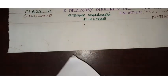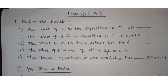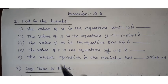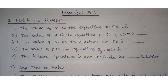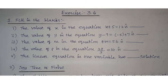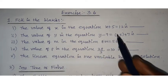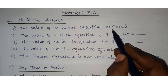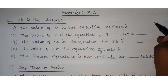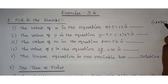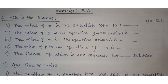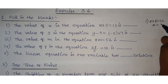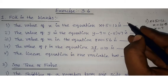Now let us start the exercise sums — Exercise 3.6. First, fill in the blanks. Do not just write the answer; you should know how to get it. The value of x in the equation x plus 5 equals 12: the plus 5 goes to the other side as minus, so x equals 12 minus 5, which is 7.